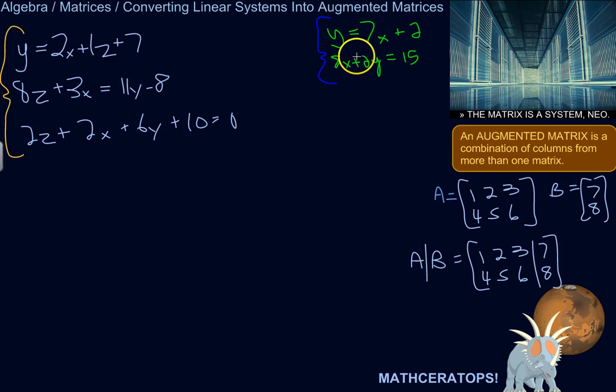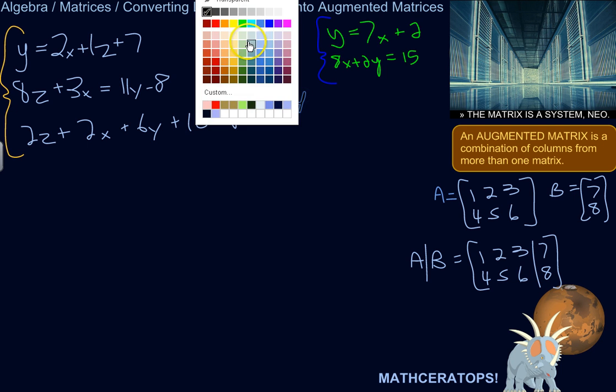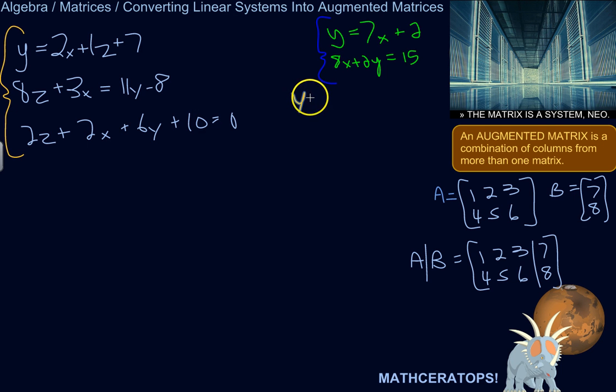Let's work on this one: y equals 7x plus 2. Let's get x and y's over on the same side together, so we subtract 7x. We've got y, which I'm going to call 1y minus 7x equals 2.